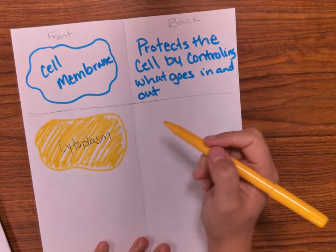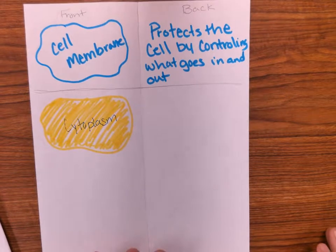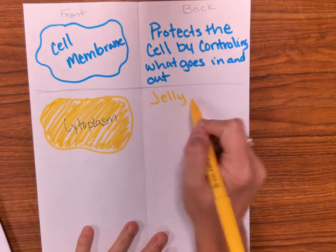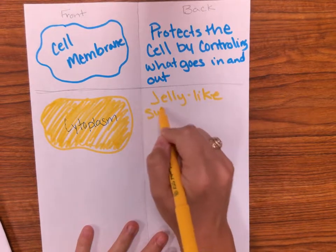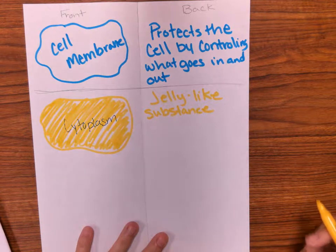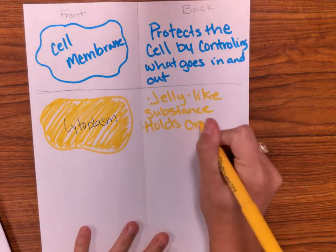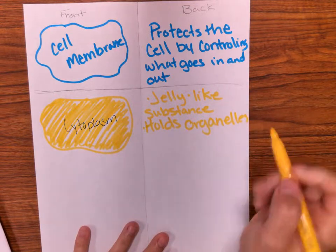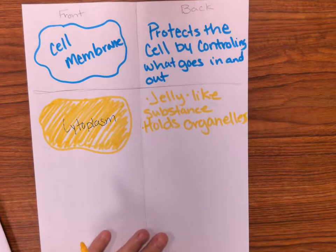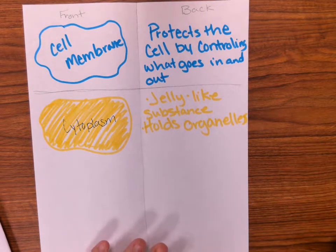I'm going to write the function in yellow so you can see it — I love color coding, so if you have markers or colored pencils, use them. The cytoplasm is a jelly-like substance, which is really just fancy talk for mostly water inside the cell. It's where organelles hang out, and it holds chemicals needed for chemical reactions so the other organelles can do their jobs.